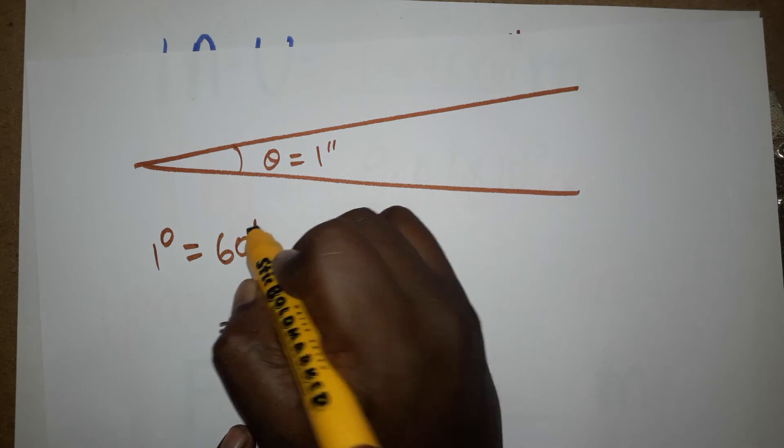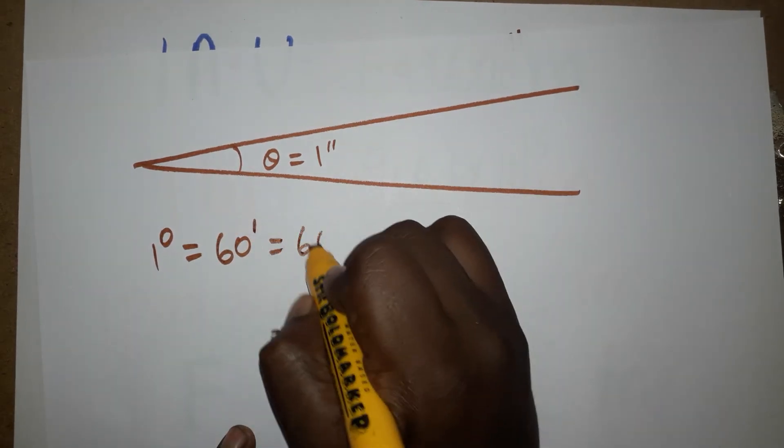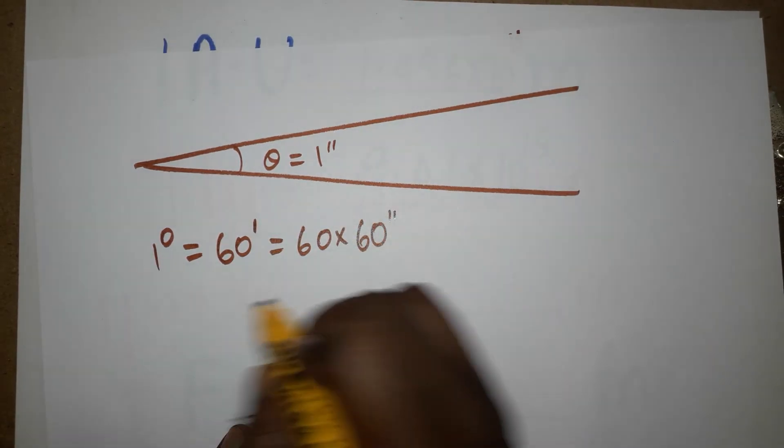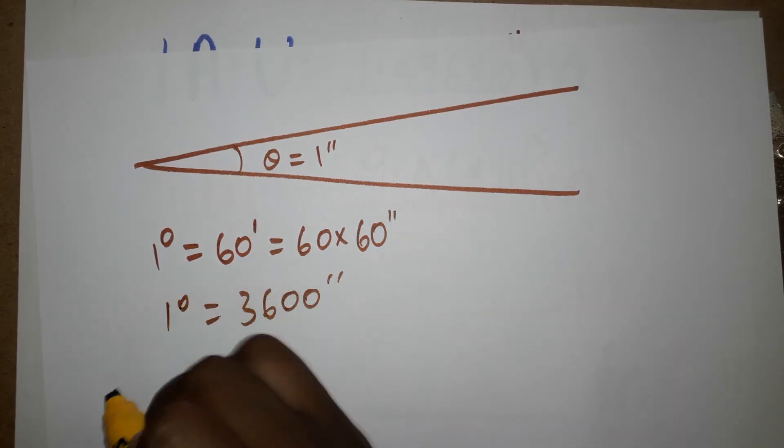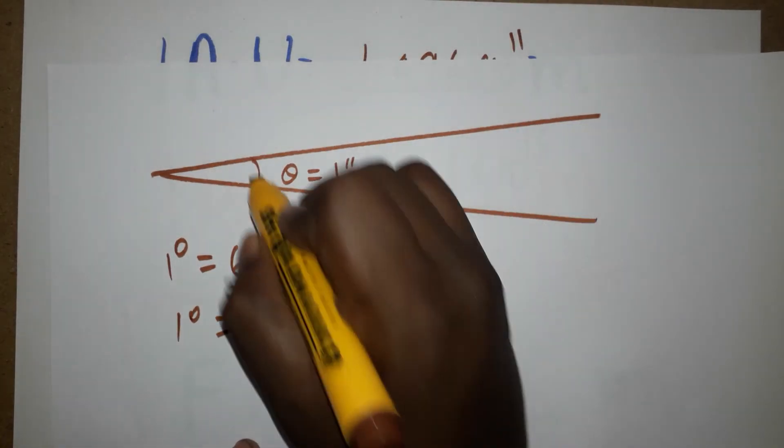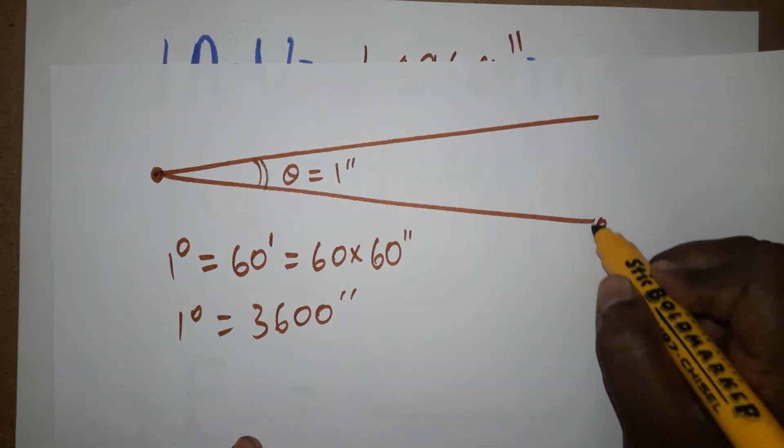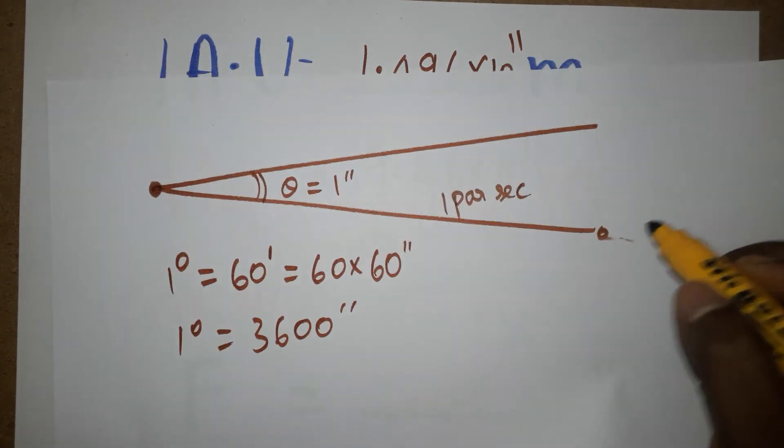If you want in seconds, 60 minutes, one minute is 60 seconds. So you can make it: one degree is 3600 seconds. So now it is a one second angle. When the angle is one second, the distance between this to this we can take as one parsec.